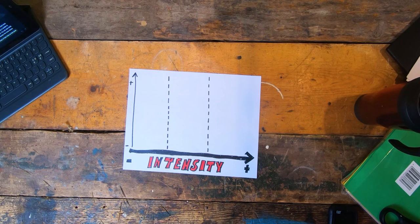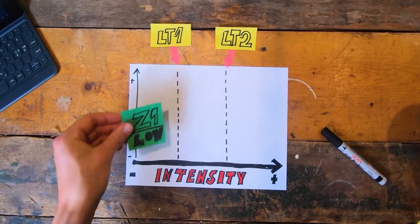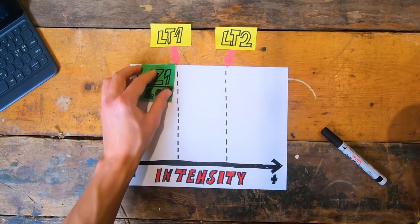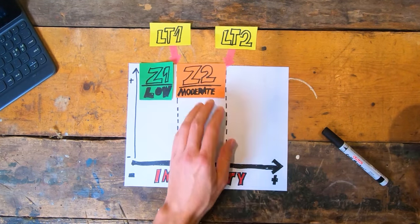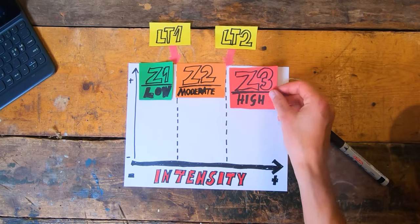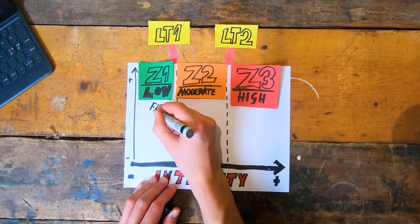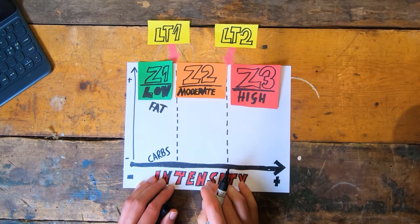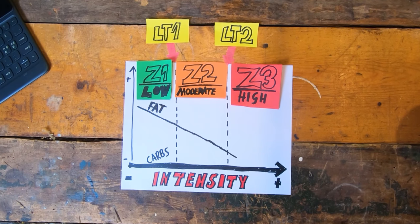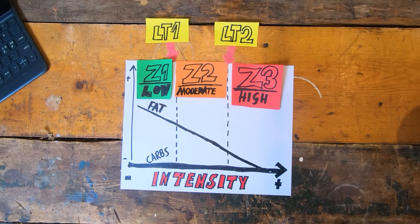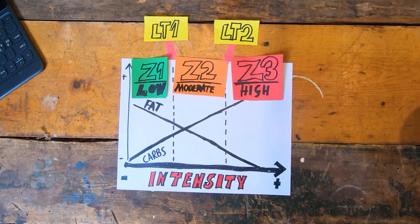As intensity increases, your body will face two lactate thresholds called LT1 and LT2. Based on these we can categorize intensities into three different zones: low, medium, and high. Then we can draw lines for the amount of fats and carbs your body uses for energy. At low intensities most of the energy comes from fats, but as intensity grows your body burns less fats and more carbs.